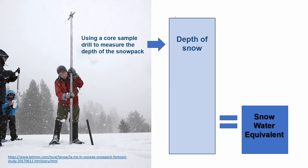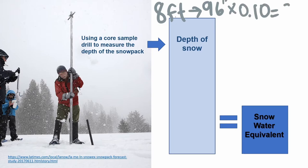To find the snow water equivalent, you first need to determine the depth of the snow in the snowpack. To calculate snow water equivalent, you multiply the depth of the snow by the snow density. For example, if the snowpack is 8 feet deep — that's 96 inches — and the snow density is 10%, then 96 inches times 0.10 equals 9.6 inches of snow water equivalent.